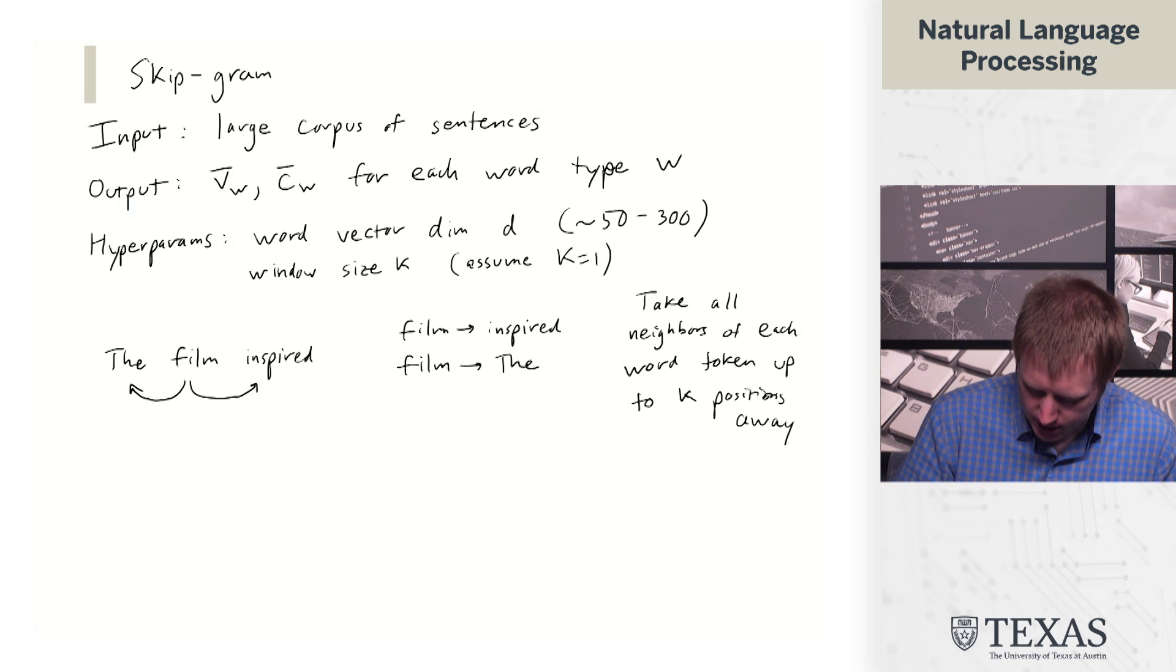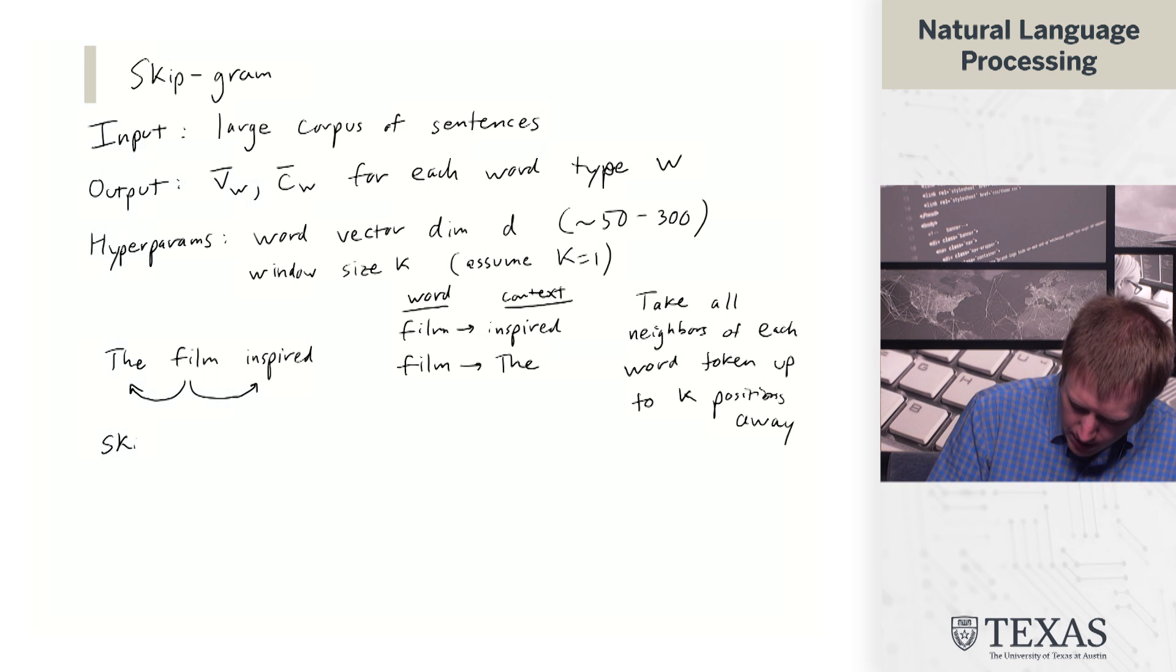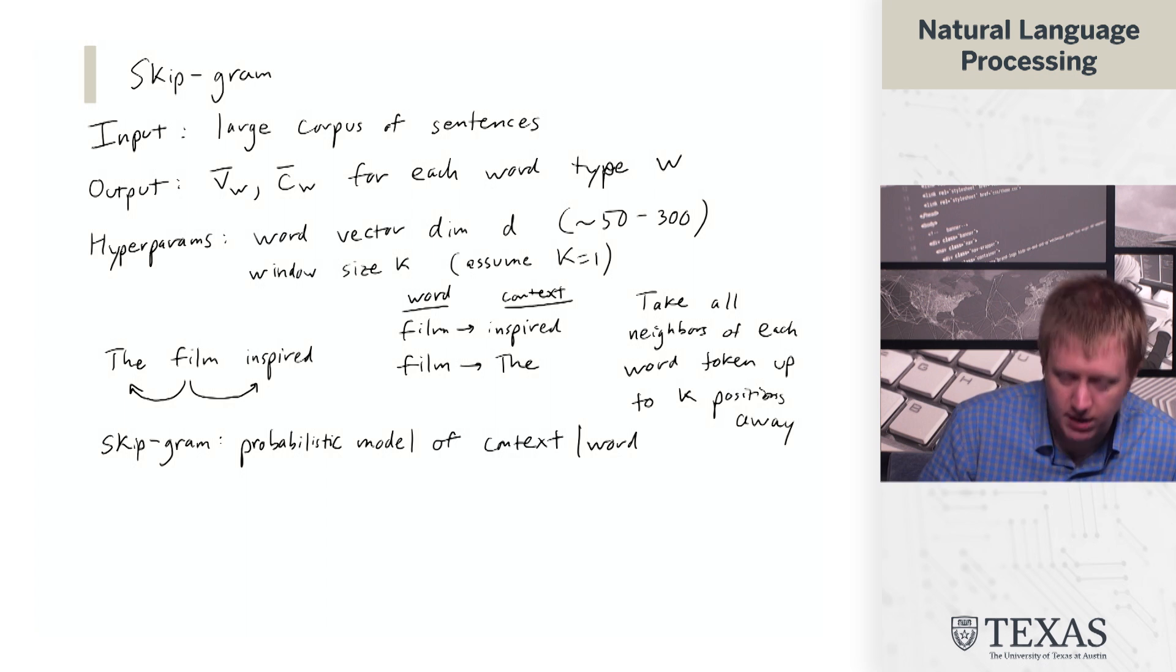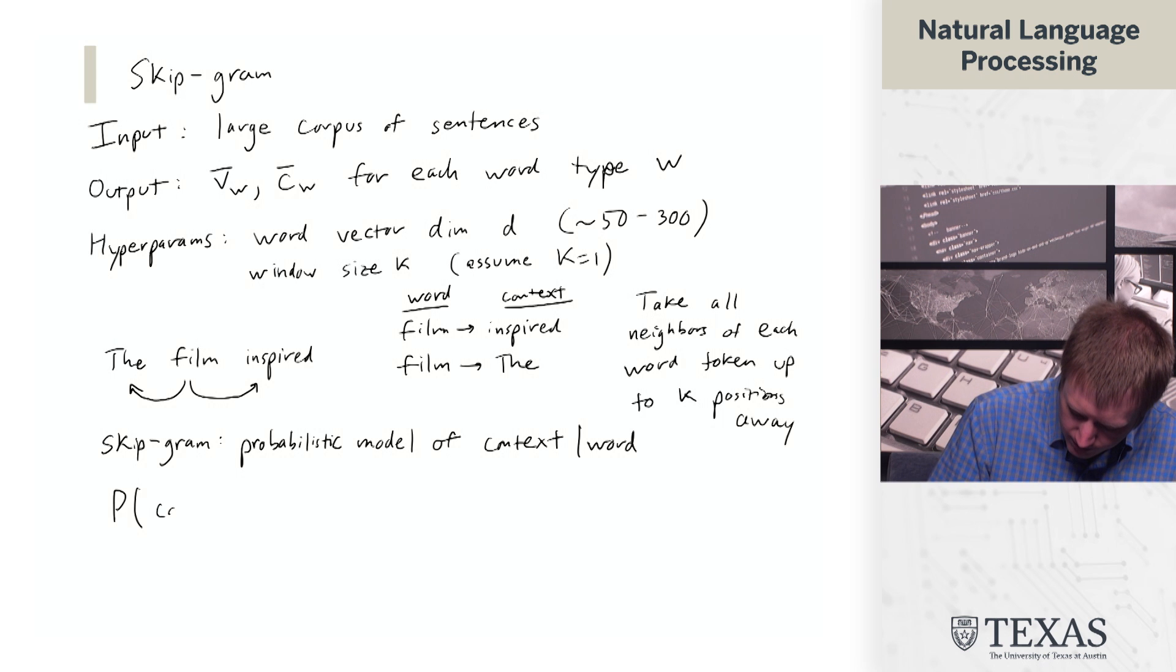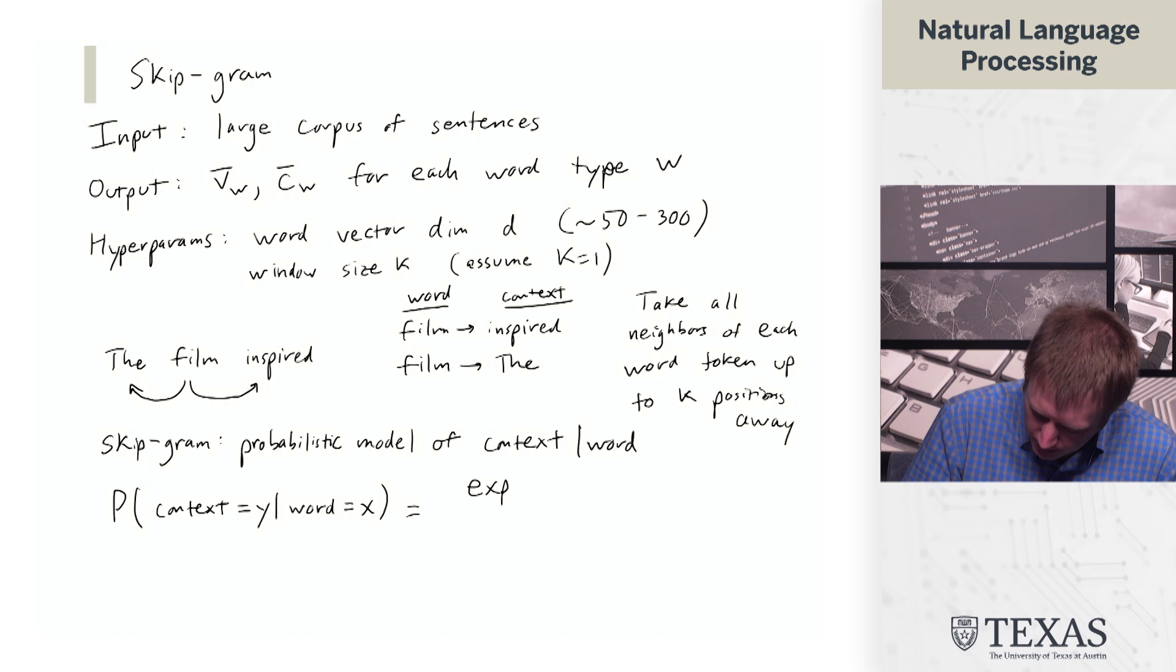And now what we have is we basically have what we call our word and our context word. And then the skip gram model is a probabilistic model of context given a word. So specifically, it's defined in the following way.